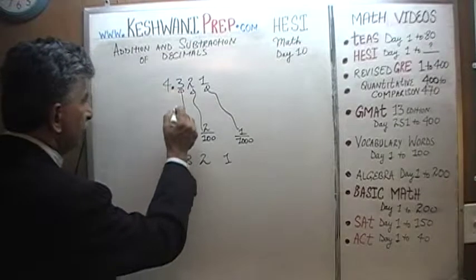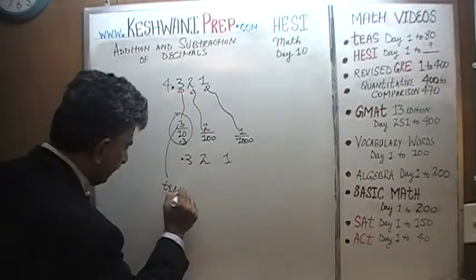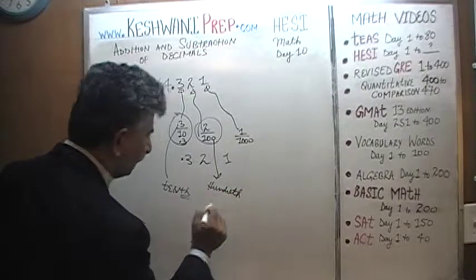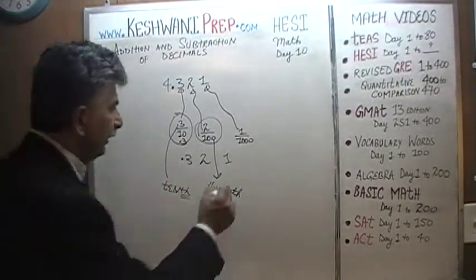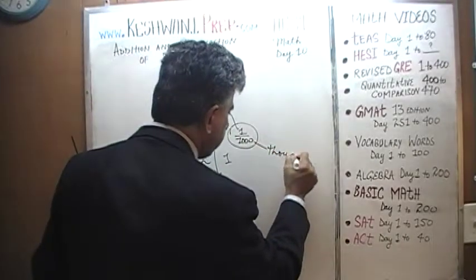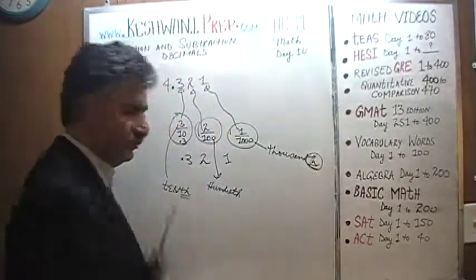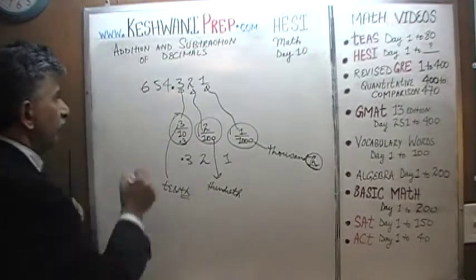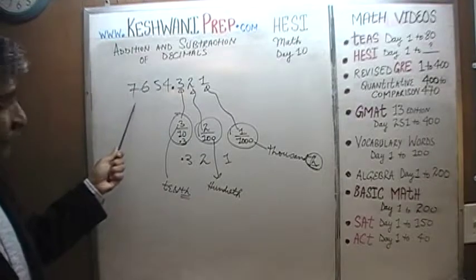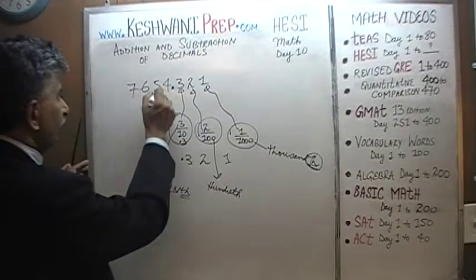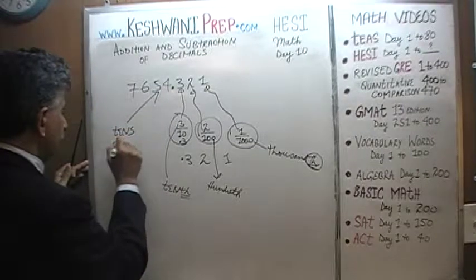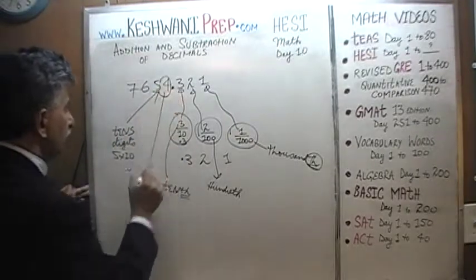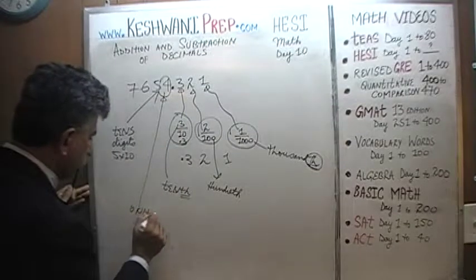Therefore, this digit right here is called the tenth digit. Then we have the hundredth digit, because it tells us we have 2 one-hundredths. And finally, we have the thousandth digit. When we get to the left of the decimal, this is the tens digit because it tells us how many tens we have — we have 5 tens. This is the units digit, sometimes called the ones digit, because it tells us how many ones we have — we have 4 ones.